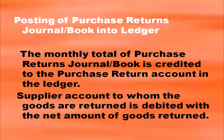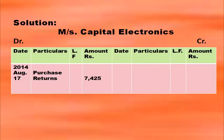Posting of purchase returns journal into ledger: the monthly total of purchase returns journal is credited to the purchase returns account in the ledger. The supplier account to whom the goods are returned is debited with the net amount of goods returned. From that question you have returned the material to Messrs. Capital Electronics. When opening the name of the supplier's account — Messrs. Capital Electronics account — how do you post the purchase returns? Messrs. Capital Electronics account will be opened with date column, particulars column, ledger folio and amount column on debit and credit sides.